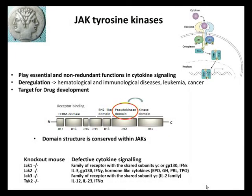JAK tyrosine kinases play essential and non-redundant functions in cytokine signaling. The family comprises four members: JAK1, JAK2, JAK3, and TYK2, which associate selectively with cytokine receptors and are activated upon cytokine binding to the receptors.